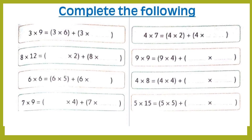Complete the following. 3 times 9 equals 3 times 6 plus 3 times blank. 9 is the larger number; we can break it into 6 plus 3. The 3 stays the same. Second one: 8 times 12. The 8 stays the same. 12 is the larger number. We can break 12 into 2 plus 10, which equals 12.